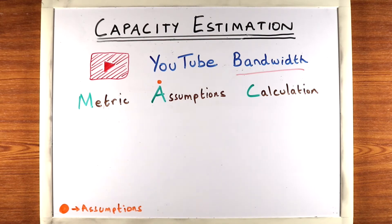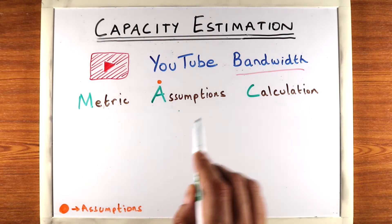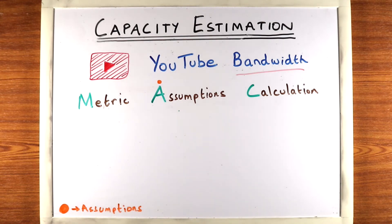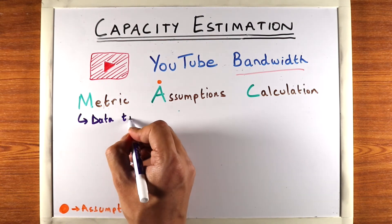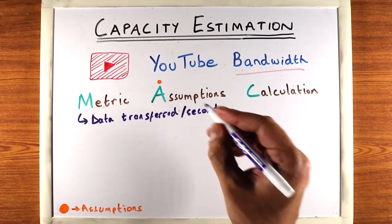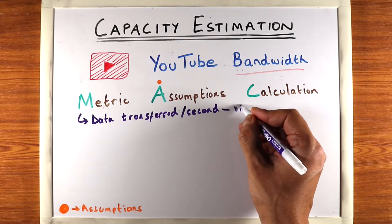So we'll follow our three-step approach: defining the metric that we're looking for first, creating assumptions about our system, and then calculating the actual metric. Now bandwidth is the amount of data that is transferred per second and what we'll do is in our system we'll calculate the data that's transferred while viewing YouTube videos.